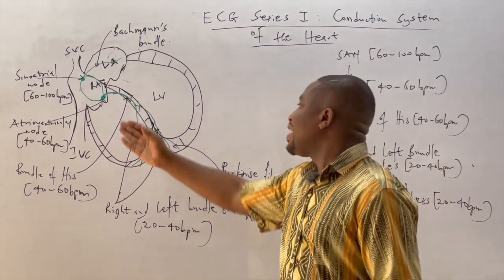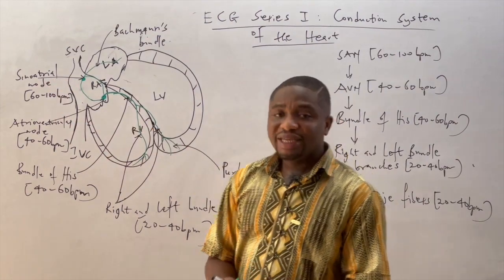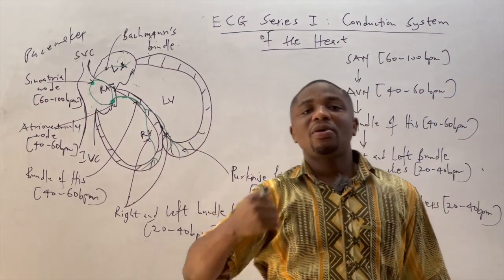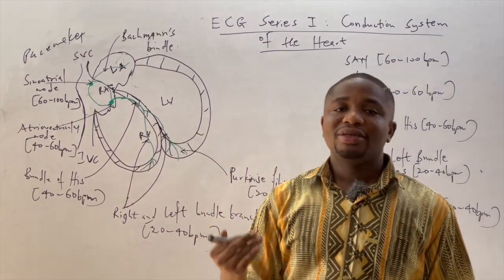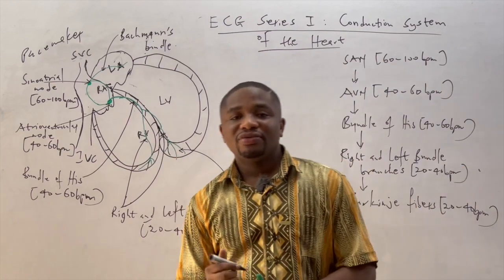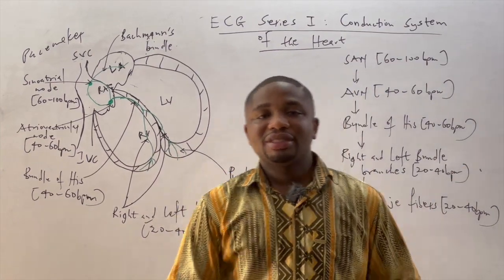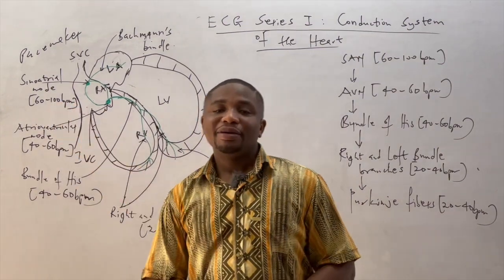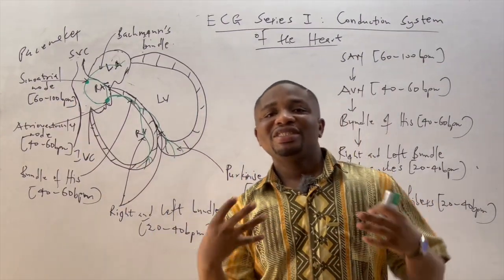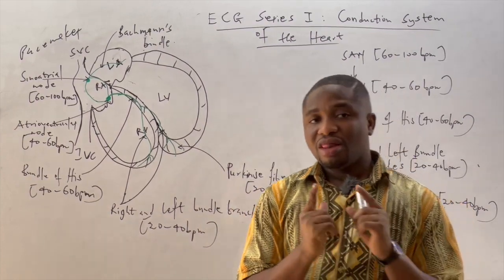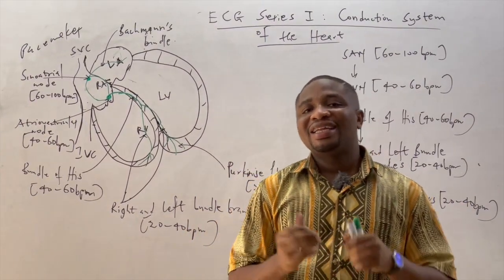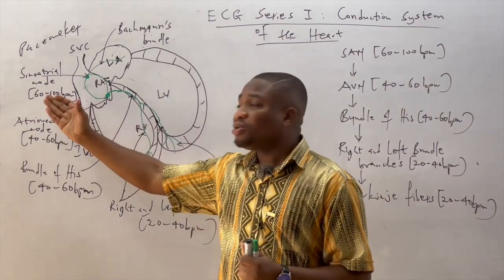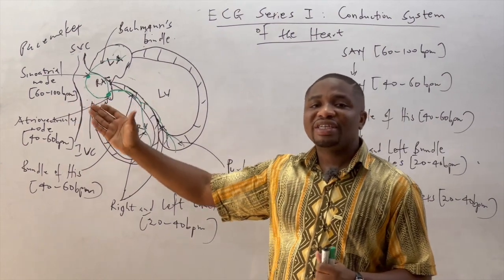The first conduction fiber is called the sinoatrial node. The sinoatrial node is considered the pacemaker of the heart because it generates impulses automatically, which are then conducted through the rest of the conduction fibers. It is located at the lateral aspect of the right atrium and generates electrical impulses at a rate of 60 to 100 beats per minute.